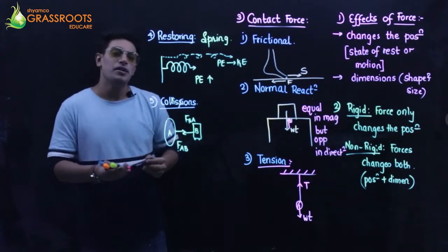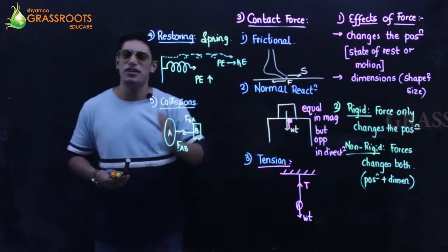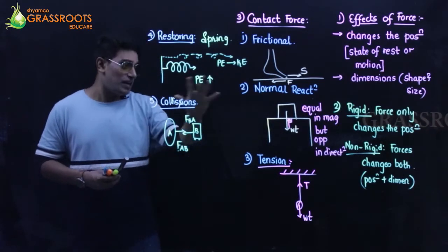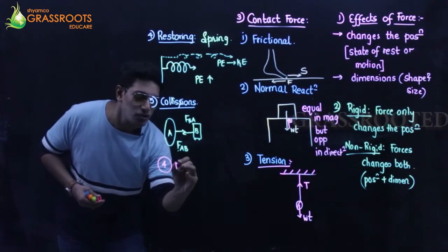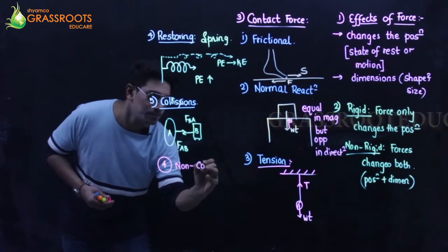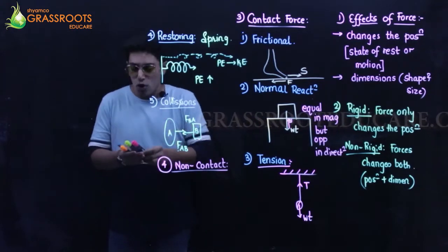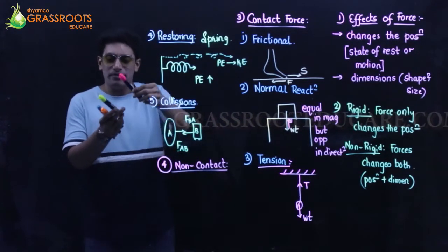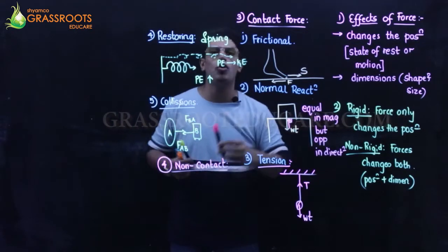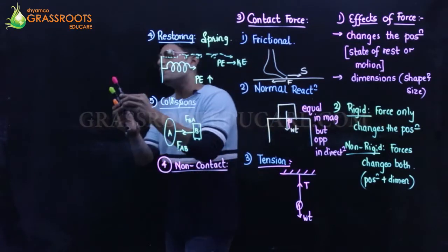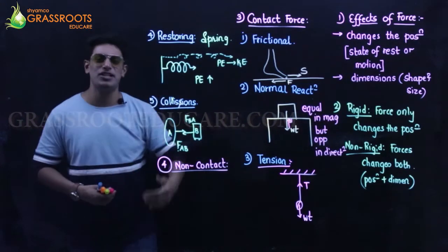Now the fourth type: non-contact forces. These are forces where there is some sort of attraction or repulsion between two bodies, but they are not in physical contact with each other. So forces which are not in touch or contact with each other are called non-contact forces.